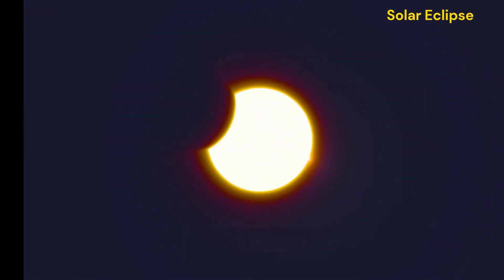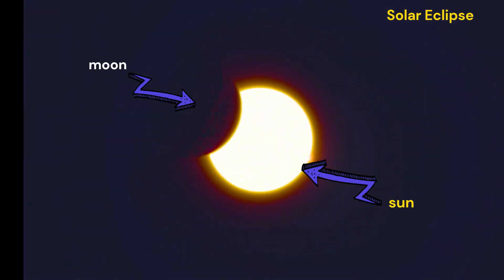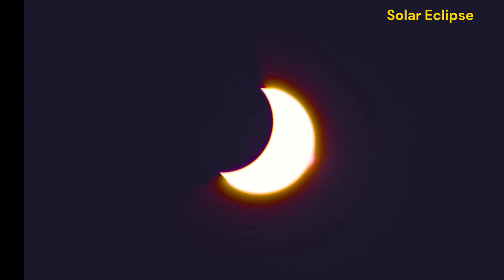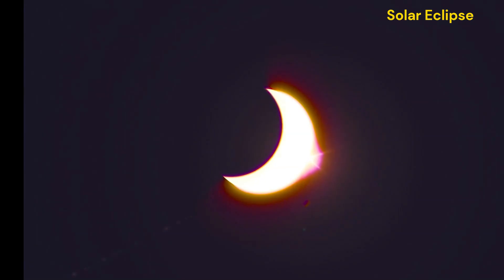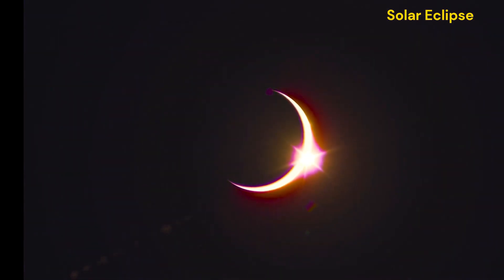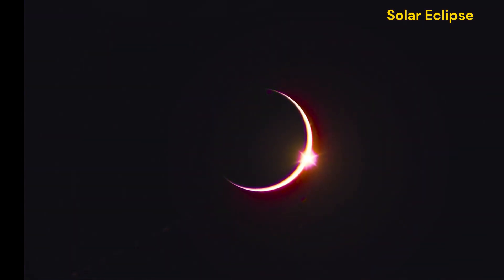A solar eclipse, a captivating celestial spectacle, occurs when the moon positions itself between the earth and the sun, casting a shadow that momentarily veils the sun. This mesmerizing event has fascinated humanity for millennia, igniting wonder and curiosity across cultures. It reminds us of the dynamic interplay among celestial bodies in our vast cosmos.